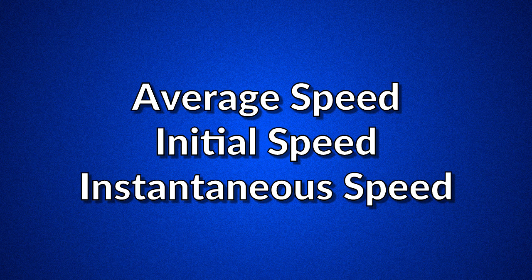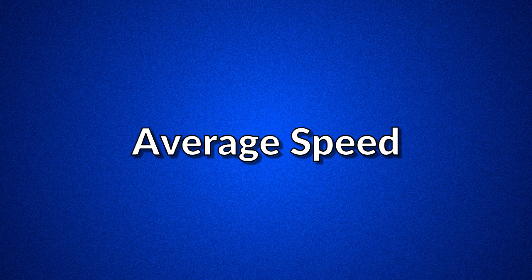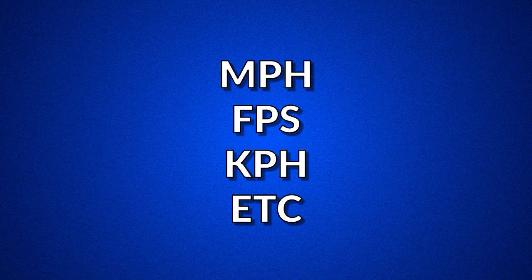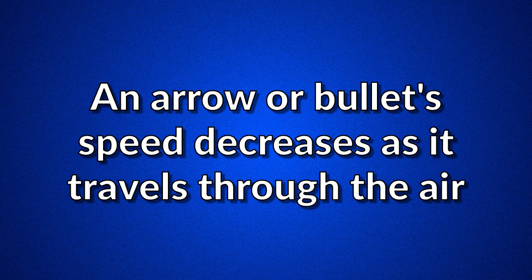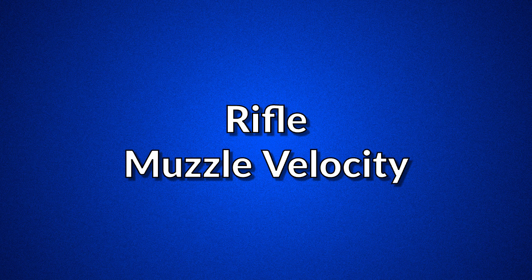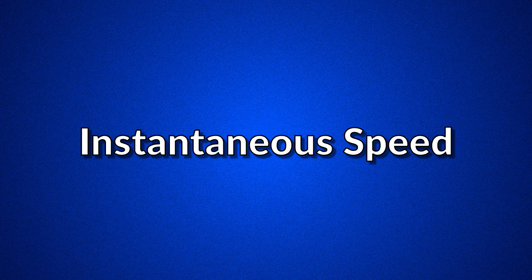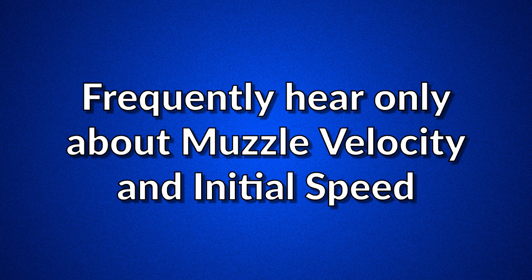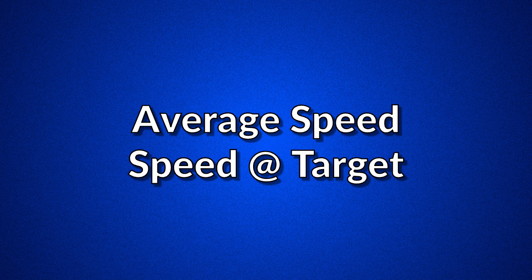The three types of speed are average speed, initial speed, and instantaneous speed. Average speed is the speed at which something travels a distance divided by the time it took to go that distance. The results could be in miles per hour, feet per second, kilograms per hour, etc. An arrow or bullet changes its speed as it travels towards the target. Initial speed is the speed that the arrow or bullet leaves the bow or rifle — with a rifle this is called muzzle velocity. Instantaneous speed is the speed at any given instant in time. Most times all you hear about is muzzle velocity or initial speed, but what about every speed getting to the target and the speed at the target? Luckily there are many tools online to get that info.